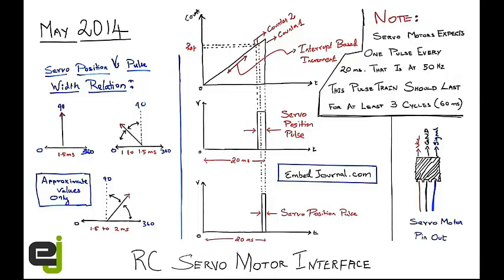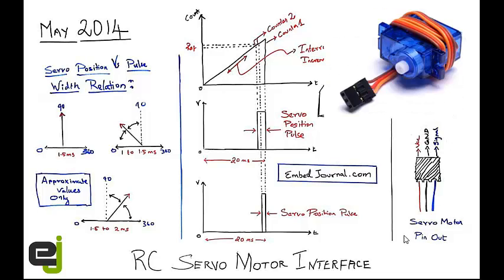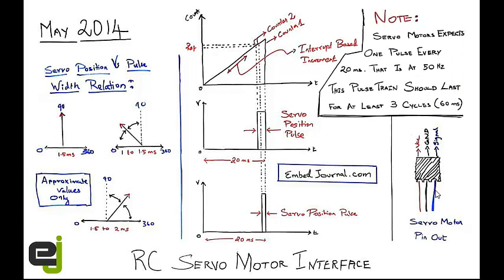Hello everyone. This is Siddharth from Embedgeneral.com. In this video, we will see the interface of an RC servo motor. Servo motors basically have three wires with them: the positive, the negative, and the signal. The signal line is usually blue or white in color. This is where you will be giving your pulse width modulated signal.